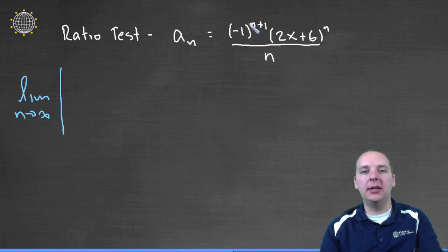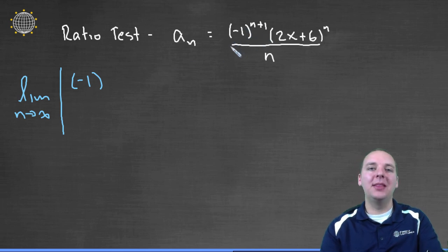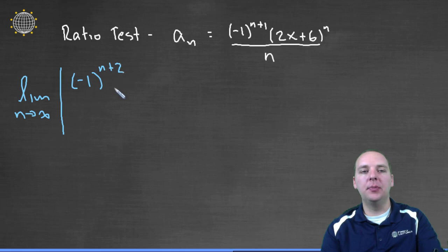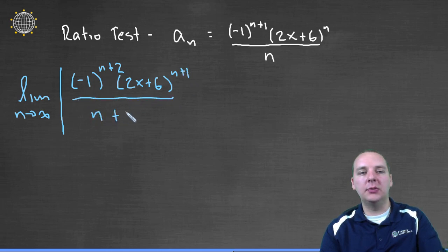So a sub n plus 1, let's take all these n's and swap them with n plus 1's. So we'd have minus 1, not to the n plus 1, but the n plus 1 plus 1, in other words n plus 2, times 2x plus 6 to the n plus 1 divided by n plus 1.